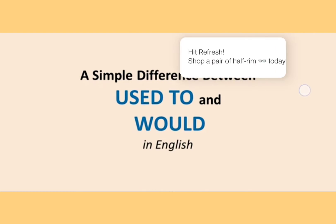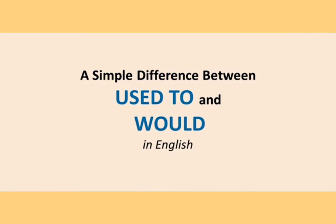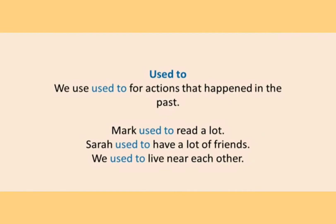Hello everyone. In this video we will talk about a simple difference between 'used to' and 'would'. Let's first discuss 'used to'. We use 'used to' for actions that happened in the past. Whenever you use 'used to', this is clearly for an action that happened in the past as well as it is completed in the past itself.